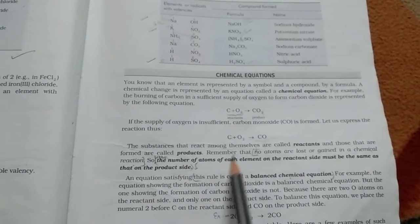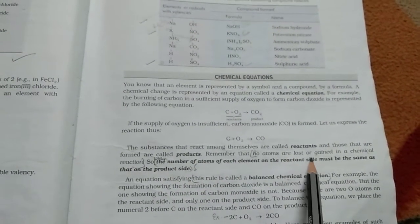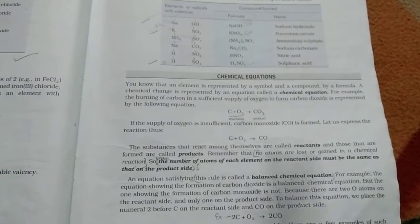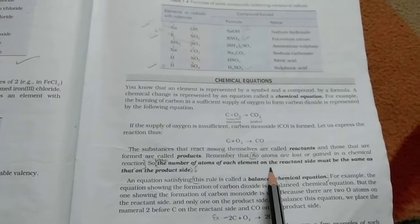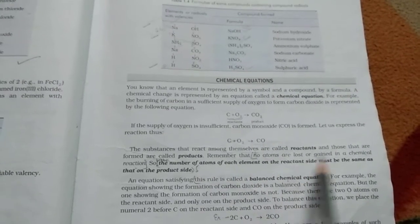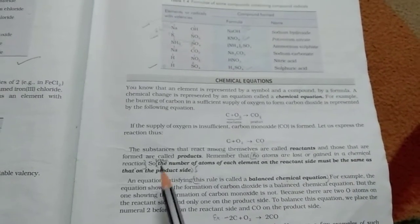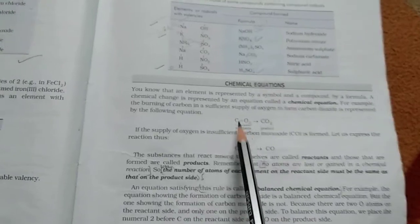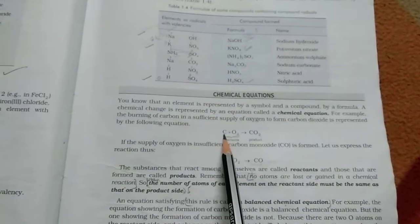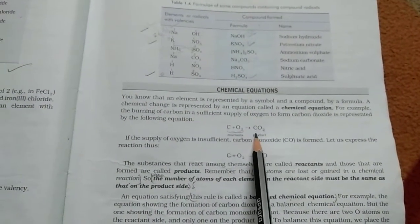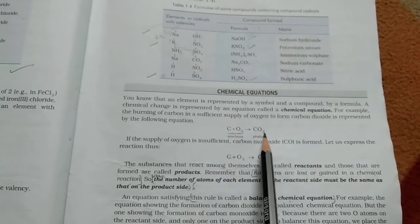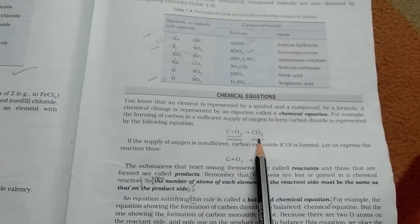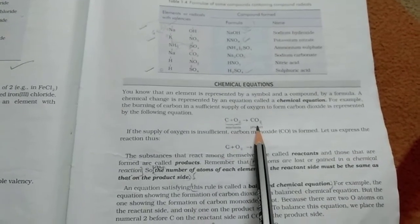One thing is, remember children, no atoms are lost or gained in a chemical reaction. So, the number of atoms of each element on the reactant side must be the same as that on the product side. Like, if we take one atom of carbon, then here is also one atom of carbon and oxygen is two atoms. So, in this side, oxygen is also of two atoms.